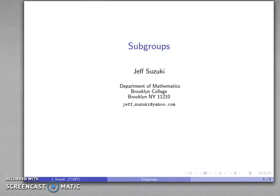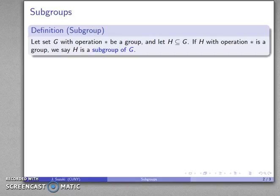Another important idea in abstract algebra is the notion of a subgroup, and this is pretty straightforward. Suppose I have some set G with operation star, and let this set be a group. I'm going to take H to be a subset of G. If H with operation star is itself a group, then we say that H is a subgroup of G, and we also use this same notation.